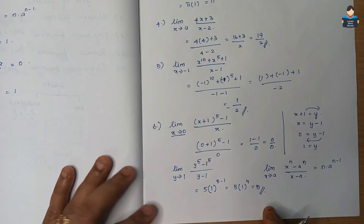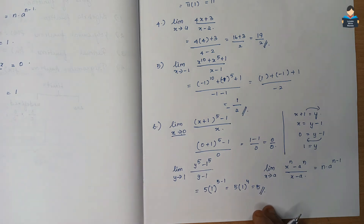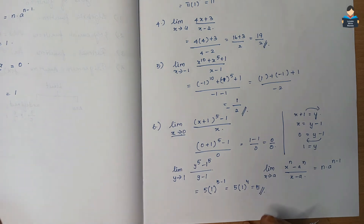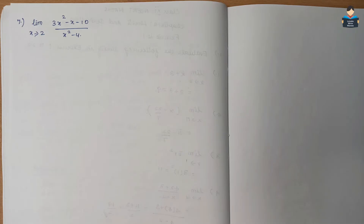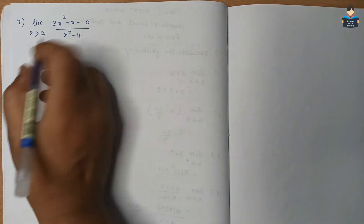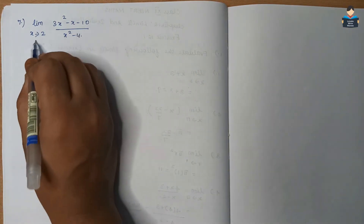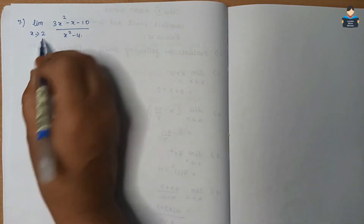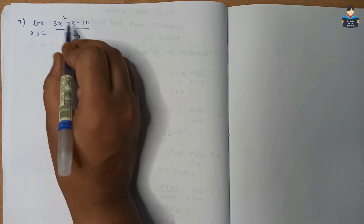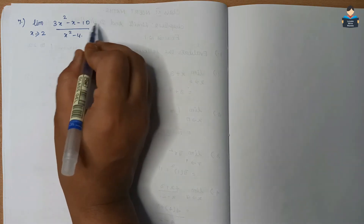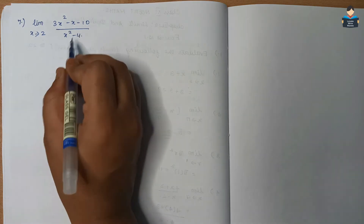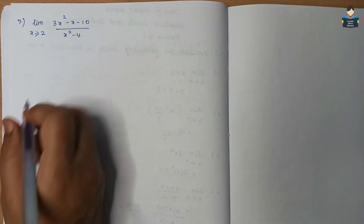Seventh question: limit x tends to 2 of (3x squared minus x minus 10) divided by (x squared minus 4). Substituting x = 2 gives 0/0 form, so we factor.